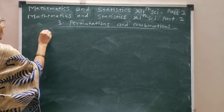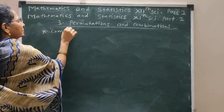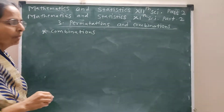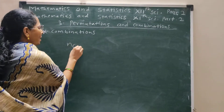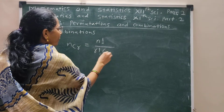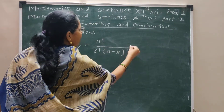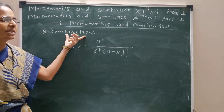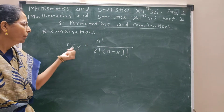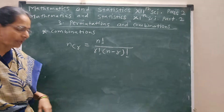Next point is combinations. The formula is NCR equals N factorial divided by R factorial times N minus R bracket factorial.